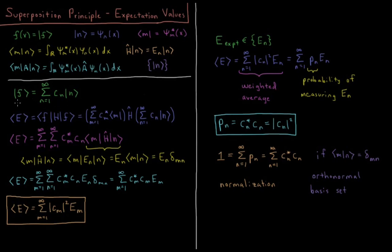If our function is just one eigenfunction, there is a 100% probability we measure the value of that function. If it is a combination, we can compute the probability of each eigenvalue individually from its coefficient. There is one extra restriction: assuming all eigenfunctions are normalized, there is a 100% chance — a probability of 1 — that all our probabilities sum to 1 over all eigenfunctions. So the sum from n equals 1 to infinity of the probability of a given state must equal 1, which equals the sum of c_n star c_n.